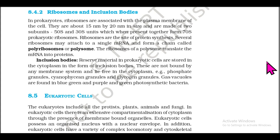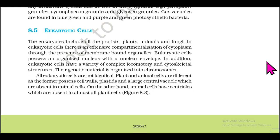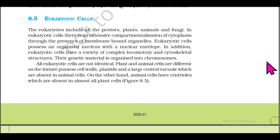Inclusion bodies: reserve material in prokaryotic cells is stored in the cytoplasm in the form of inclusion bodies. These are not bound by any membrane system and lie free in the cytoplasm. Examples include phosphate granules, cyanophycean granules, and glycogen granules. Gas vacuoles are found in blue-green, purple, and green photosynthetic bacteria.